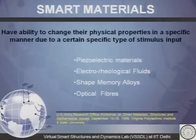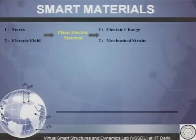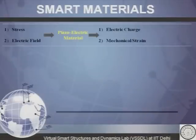Starting with the introductory lecture: what is a smart material? Any material which has the ability to change its physical properties in a specific manner when a specific type of input is applied on it is a smart material. Different types of smart materials are piezoelectric materials, electroreological fluids, shape memory alloys, and optical fibers. Taking them one by one — first is the piezoelectric material.